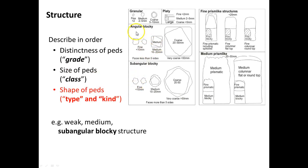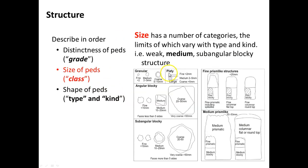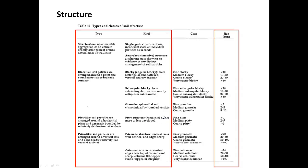Let's look at type and kind first. This refers to angular blocky, where size refers to all the different size classes within each type and kind. We'll also provide you with a table. Focus on type, kind, and size: type is structureless, blocky-like, plate-like, or prism-like, and then these are more refined kinds. Here are the size classes associated with each one.